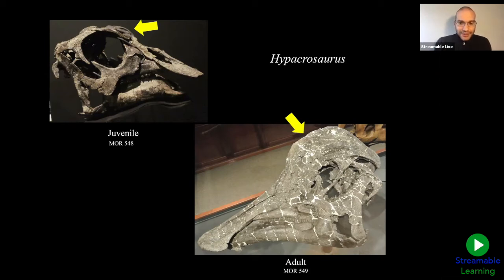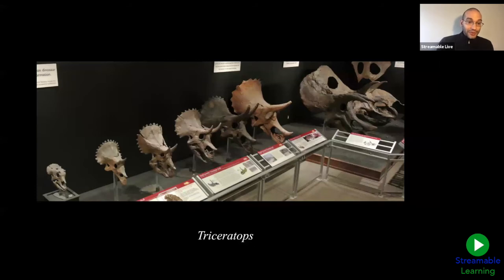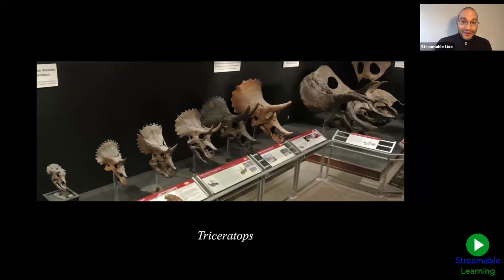Skull shape changes as dinosaurs grow up — we see this in lots of dinosaurs. Here's the horned dinosaur Triceratops on display at the museum, ranging from little ones to bigger ones. As Triceratops grew up, its skull also changed shape — when little, the horns above the eyes curve backwards, but when bigger they begin to curve forwards. At the same time, little Triceratops have spiky projections around the frill at the back of the skull, but when they grow up those spikes flatten down onto the edge of the frill.